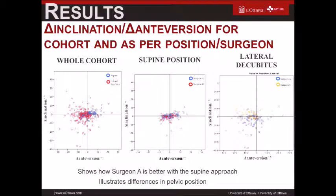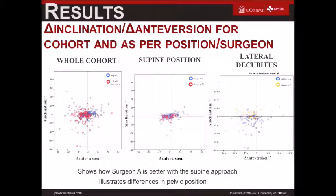Comparing the three surgeon groups, Surgeon A — who did both approaches — shows tight cup targeting in the supine position, but much less reliable cup orientation accuracy in the lateral decubitus position, similar to Surgeon C who performed lateral position only. This demonstrates that with the same surgeon, cup positioning is much more reliable in the supine position compared to lateral, which is consistent across surgeons.